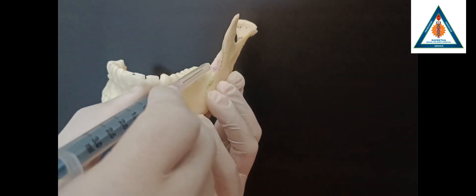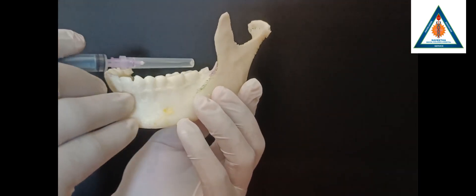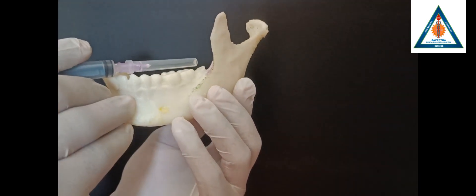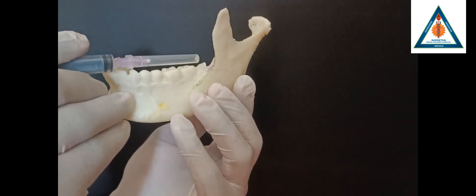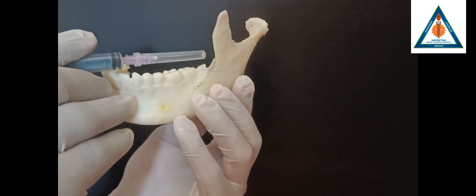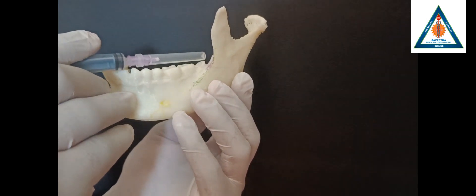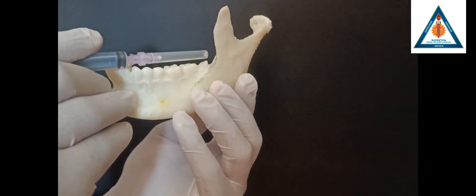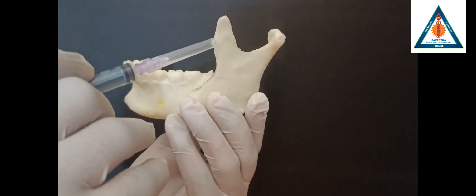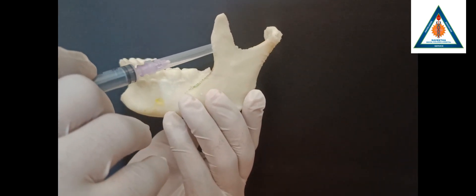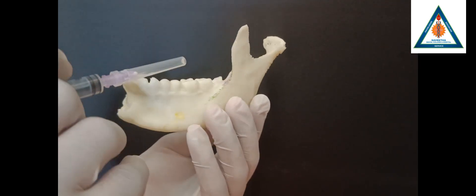The third landmark will be your occlusal surface of the tooth. Whenever you are delivering the local anesthesia, the entry of the needle should be around 6 to 8 mm above the occlusal surface of the teeth. In some textbooks, the coronoid notch is also given as one of the landmarks for the inferior alveolar nerve block technique.